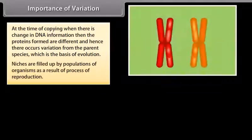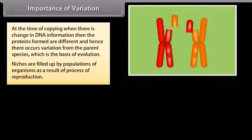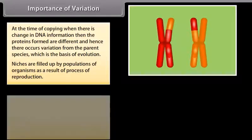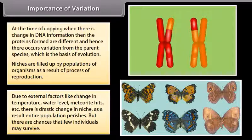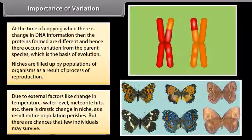Niches are filled up by populations of organisms as a result of the process of reproduction. Due to external factors like change in temperature, water level, meteorite hits, etc., there is a drastic change in the niche. As a result, the entire population perishes, but there are chances that a few individuals may survive.